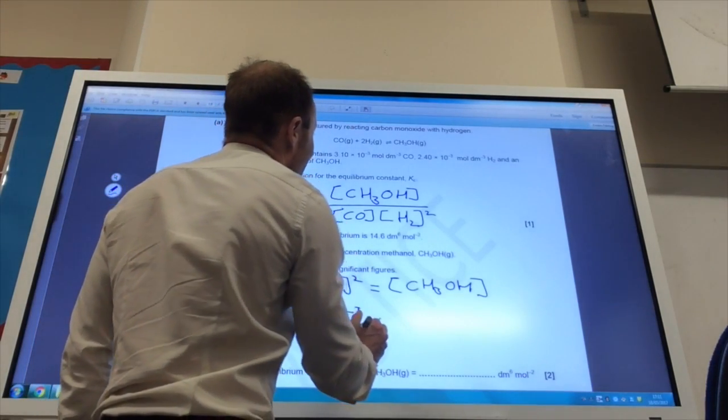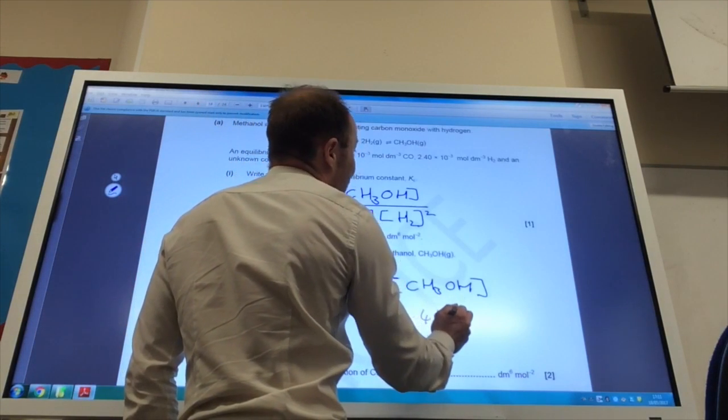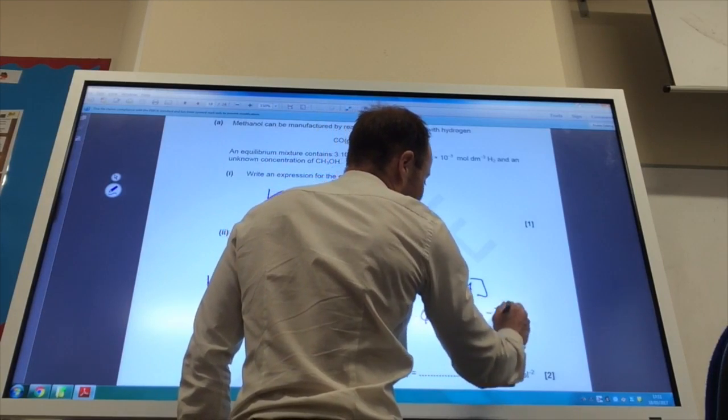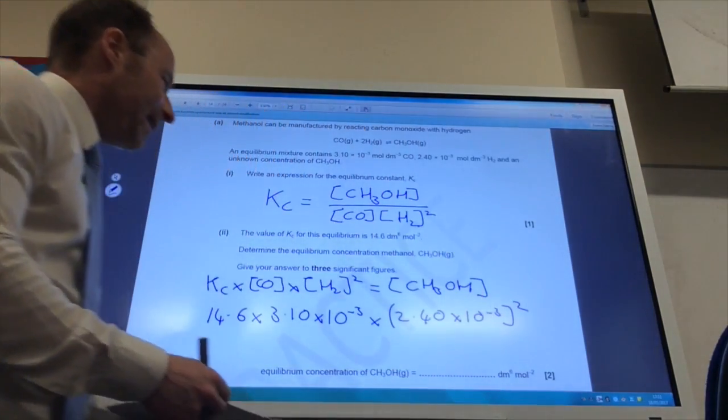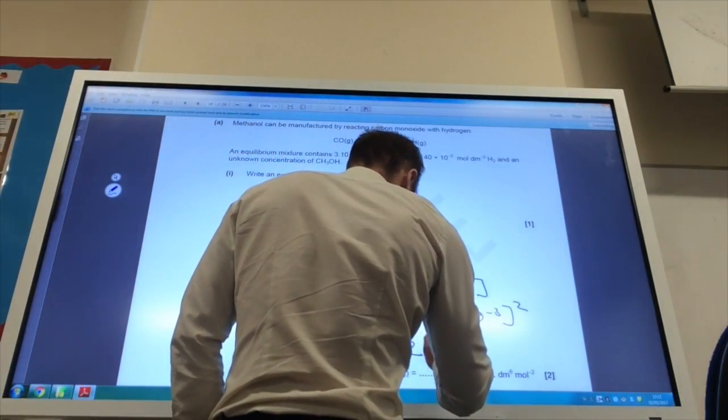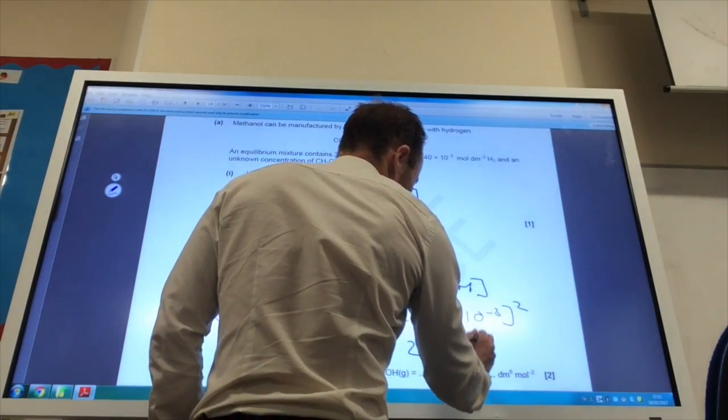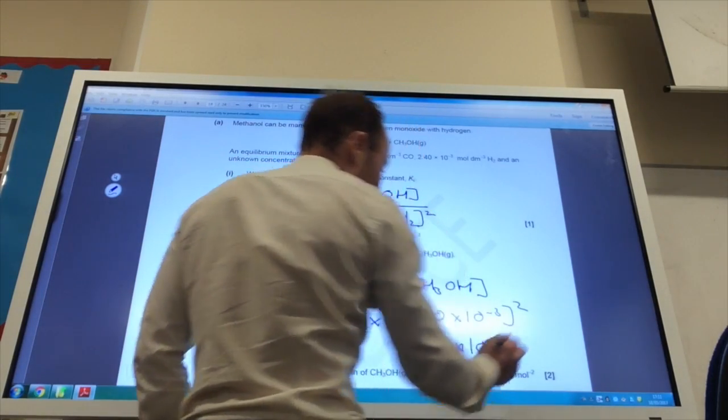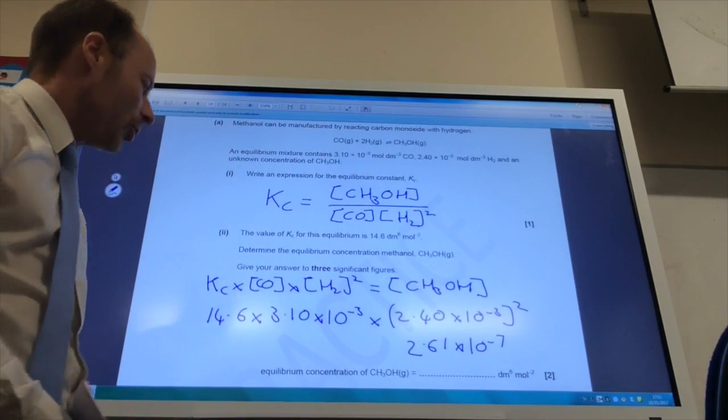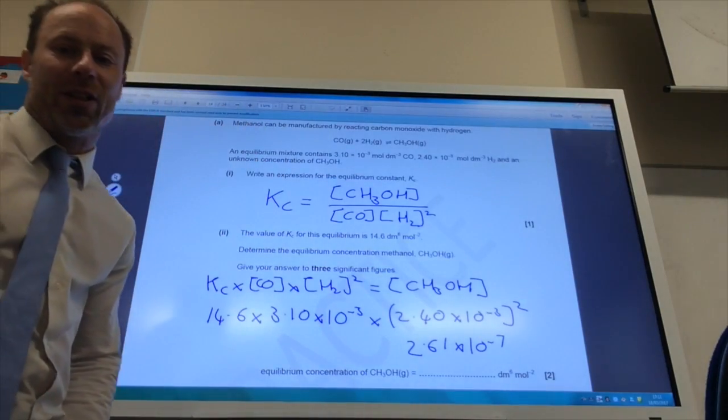And then I'm going to times that by the concentration of hydrogen, 2.40 times 10 to the minus 3, and that of course is squared. And if you do that, you will find the concentration of methanol is 2.61 times 10 to the minus 7. And that of course should be, they put the wrong units here, it should be moles per decimetre cubed.